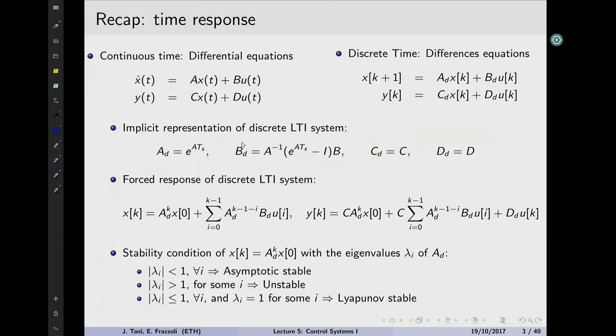Now we have this response of the system. We know that if we feed an initial condition and an input to the system, we get something. And we said, well, control systems really cares about, first of all, keeping things stable. What does stable mean? Stable means that fundamentally, if you send a bounded input to a system, you get a bounded output — things basically don't explode.